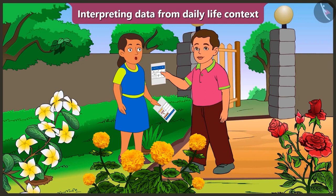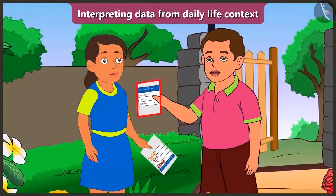Data. I mean, to collect the data. But the data about all the blossomed flowers is already filled in this table. That's why you don't need to count the flowers one by one in the garden. Because whatever details are already filled in this table about the flowers, you just need to understand that data. Come on, let me teach you.